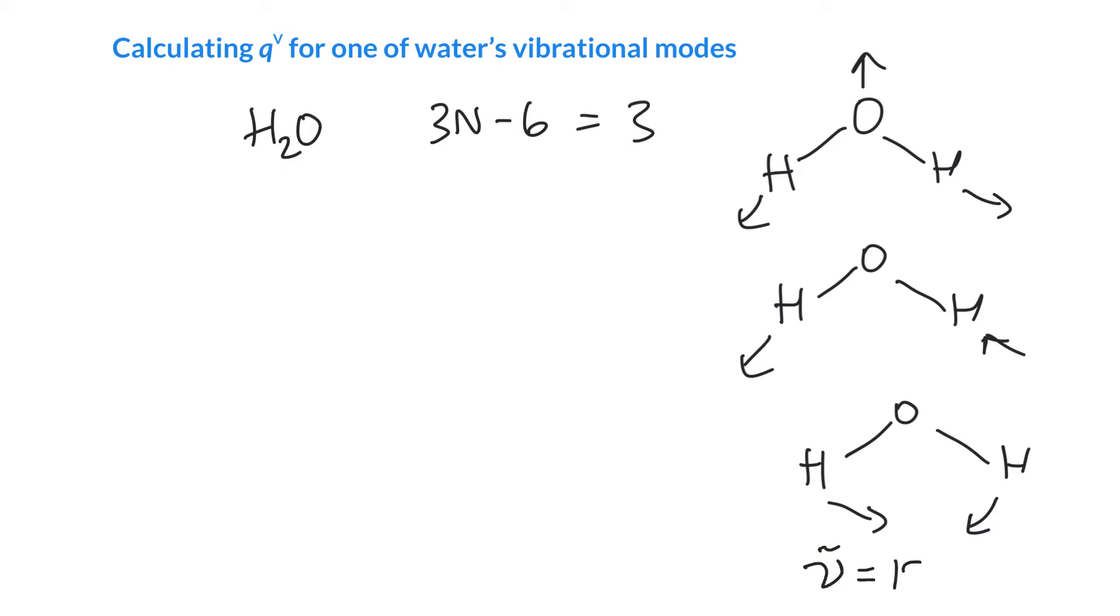So we can go ahead and say that the vibration of this one here is about 1,600 wave numbers. I think it's 1595, and we can look at this at 25 degrees C. And we can look at just this one vibrational mode and we can calculate q^v for this mode, which is the bending motion here. So we can really just kind of plug in here. So q^v is 1 over 1 minus e to the minus energy over kT.